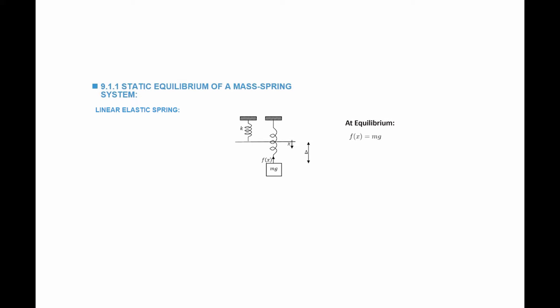To achieve static equilibrium we equate the force of the spring to the weight mg. At equilibrium, the force in the spring is k multiplied by delta of equilibrium, which is equal to mass multiplied by g. So the displacement at which equilibrium is achieved is obtained from this equation.